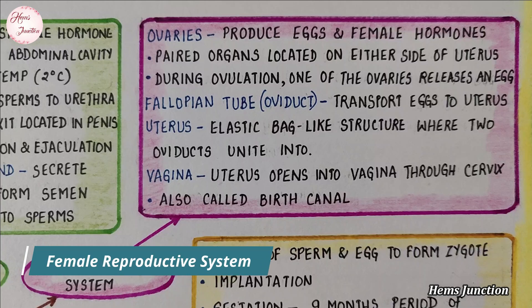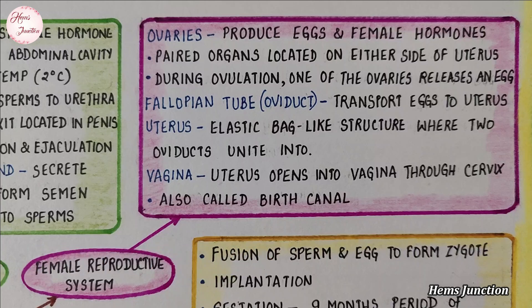The female reproductive system consists of these organs: ovaries, fallopian tube (which is also called oviduct), uterus, and vagina.